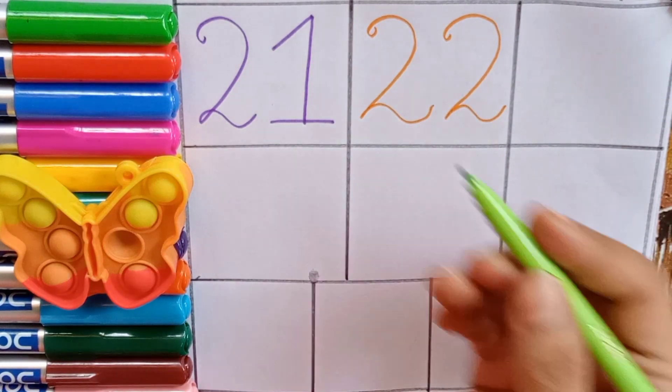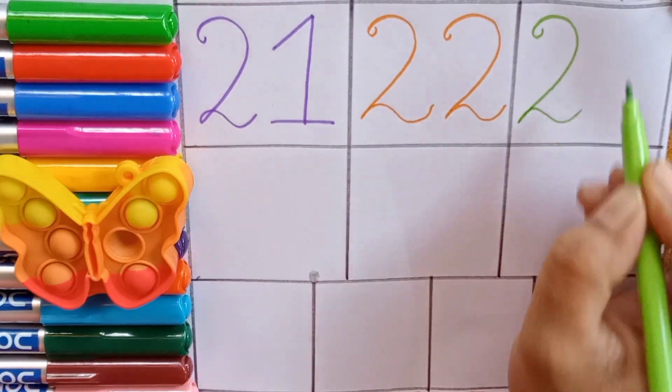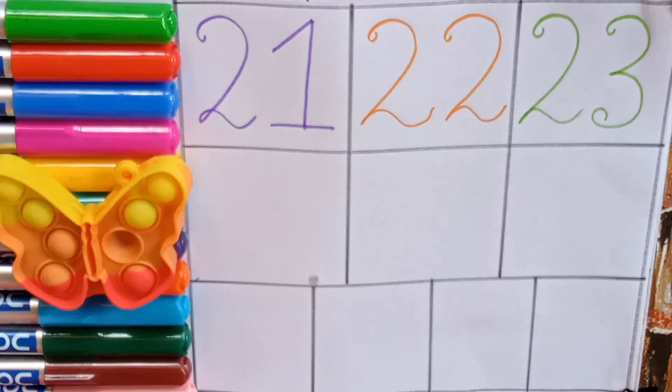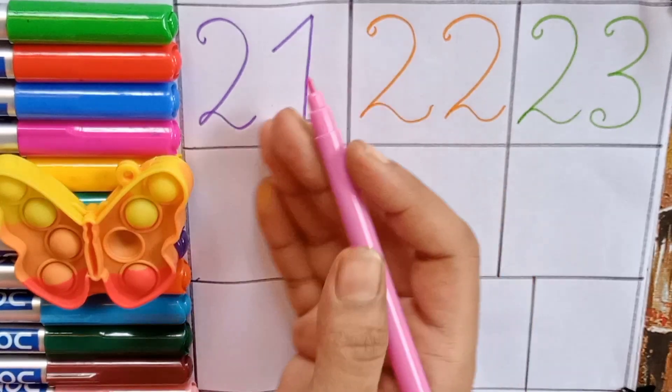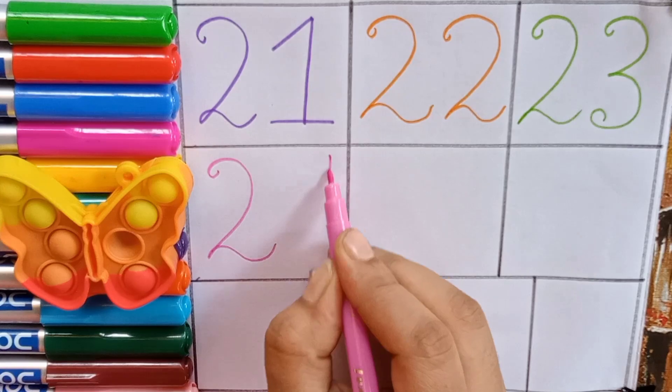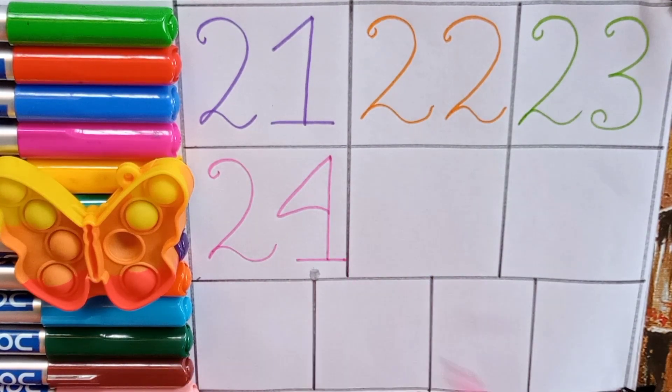Light green, one, two, three, twenty-three. Two, three, twenty-three. Pink, two, four, twenty-four. Two, four, twenty-four.